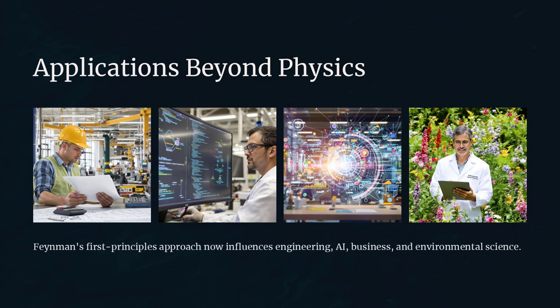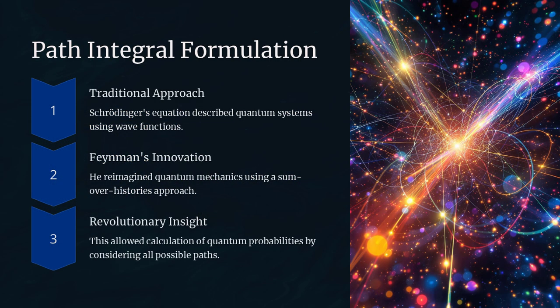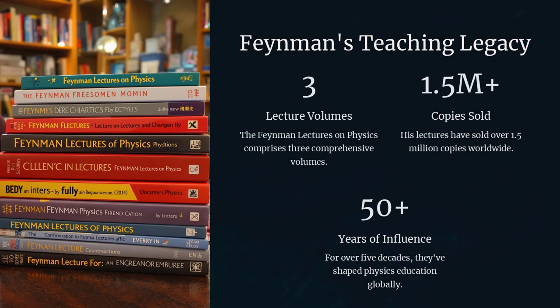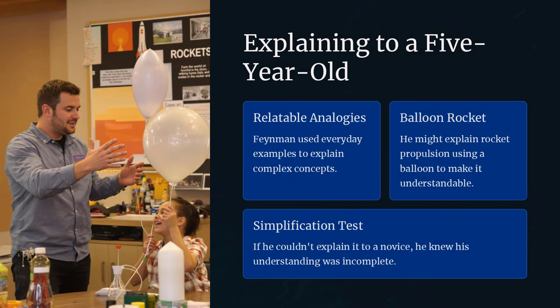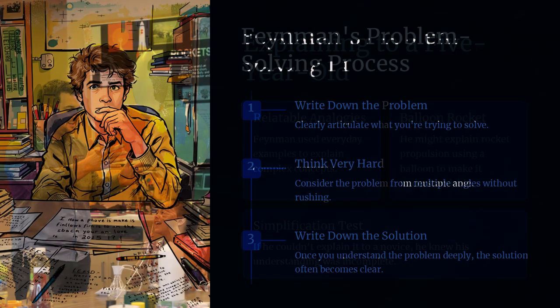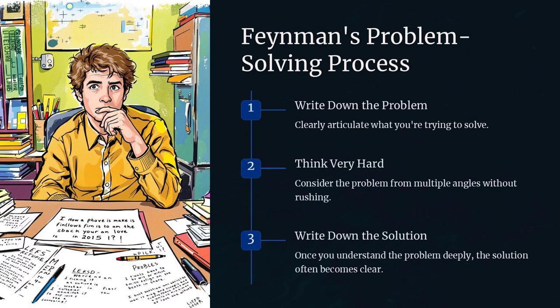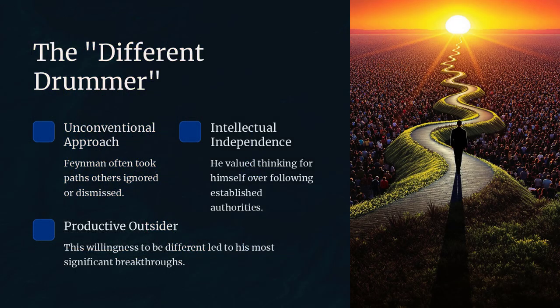Feynman's unique teaching style also reflected his research philosophy. He was known for his ability to explain complicated concepts in simple, accessible terms, a practice that not only educated others, but also reinforced his own understanding. His lectures and writing, such as the Feynman Lectures on Physics, are exemplary of how clarity of thought and communication are essential to both research and invention.